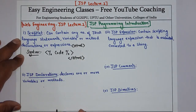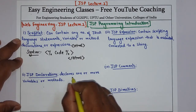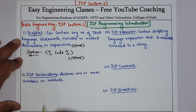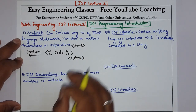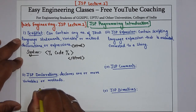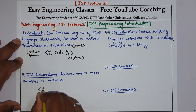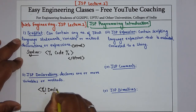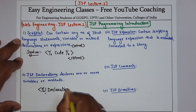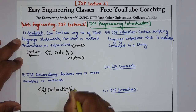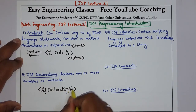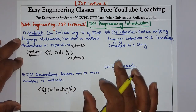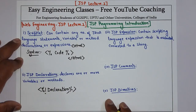Second is JSP declarations. JSP declarations are used to declare one or more variables or methods. The syntax is: opening bracket, percent sign, your declaration, semicolon, percent sign, closing bracket. So that is your JSP declaration syntax.